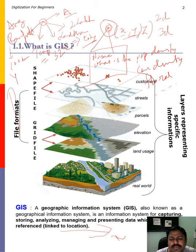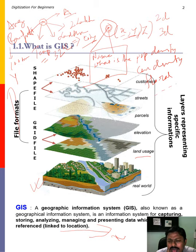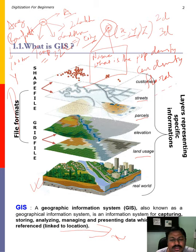Looking at a representative picture, we can see that in different layers, different information is presented. In one layer, land use is represented; in another layer, elevation; in another, parcels; then streets; and another layer for customers. Various types of information can be represented by different layers with the help of the Geographical Information System.